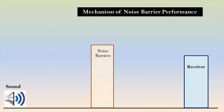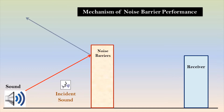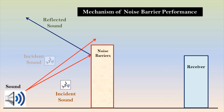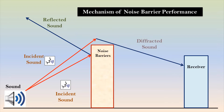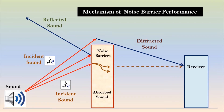Incident sound energy that comes from a source can be reflected by a barrier wall. Some amount of sound energy bending over an obstacle is known as diffracted sound. Some fractions of sound energy are absorbed by the noise barrier, and some are transmitted through the barrier and reach the receiver.